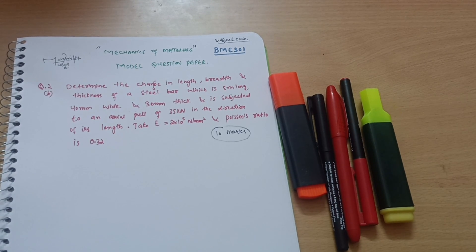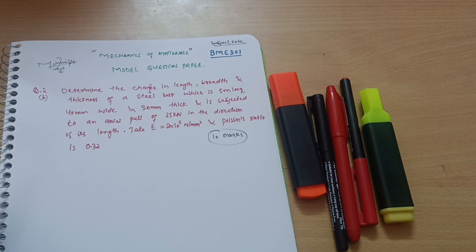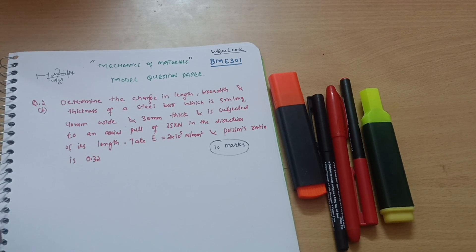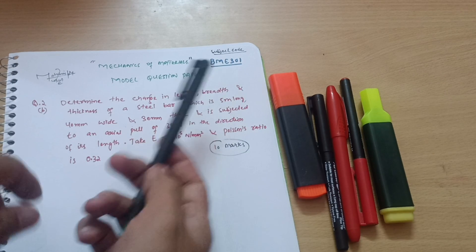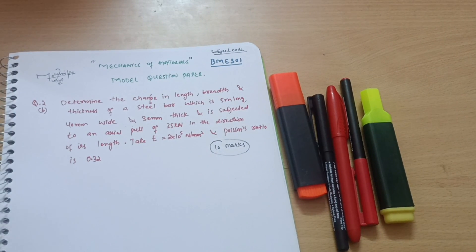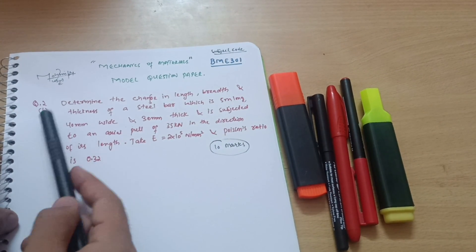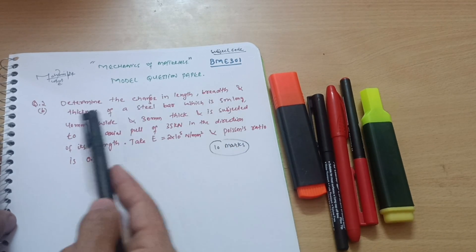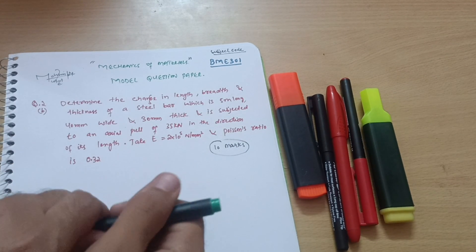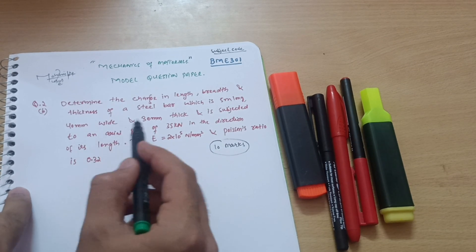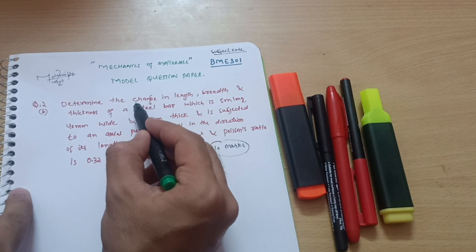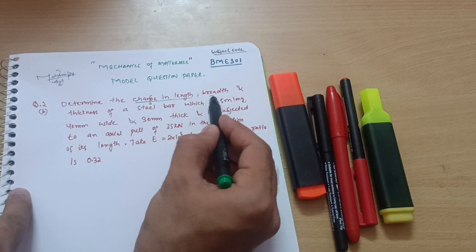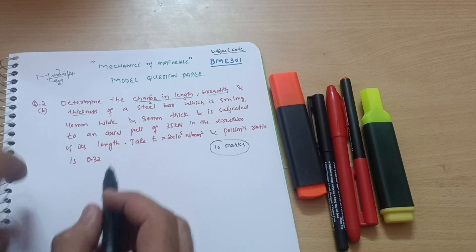Hello everyone and welcome back to my channel. We are discussing the model question paper of the Mechanics of Materials subject for mechanical engineering students. The subject code is BME 302. Today in this video we will discuss question number 2B of the model question paper: determine the change in length, breadth, and thickness of a steel bar which is 5 meters long, 40 mm wide, and 30 mm thick.